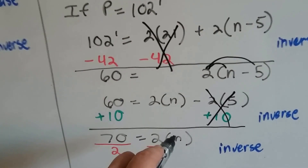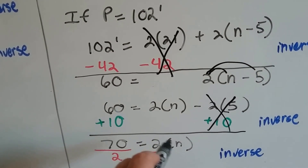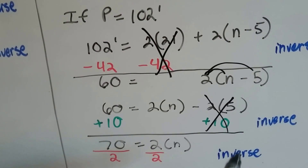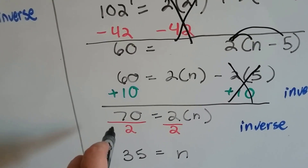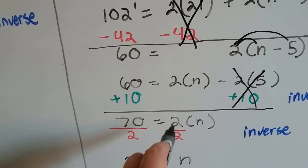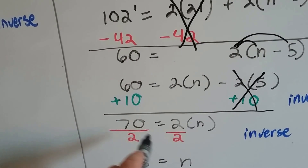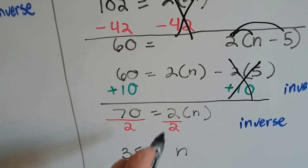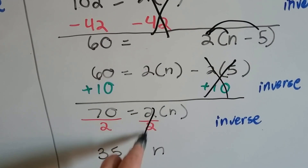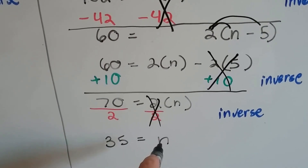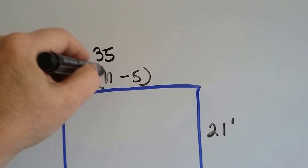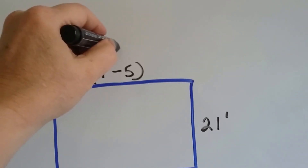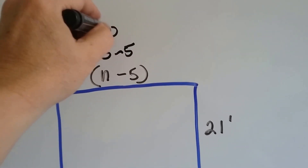We've got 70 is equal to 2n. Because 2n means 2 times n, the inverse of multiplication is division. So we're going to divide both sides by 2 to get rid of this 2 and get n by itself. 70 divided by 2 is 35, and the 2 divided by 2 leaves just n. So 35 is equal to n. If we plug that in, this side is 35 minus 5, which equals 30.